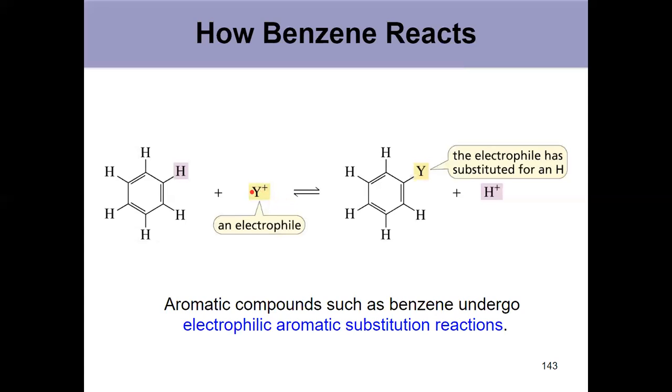Because an addition reaction would destroy one of the pi bonds and interrupt the criteria for aromaticity. So what benzene does is substitution reactions. It takes an electrophile and substitutes one of the hydrogens, brings the hydrogen in, replaces, or sorry, brings the electrophile in, replaces the hydrogen, which gets kicked out. It gets substituted.